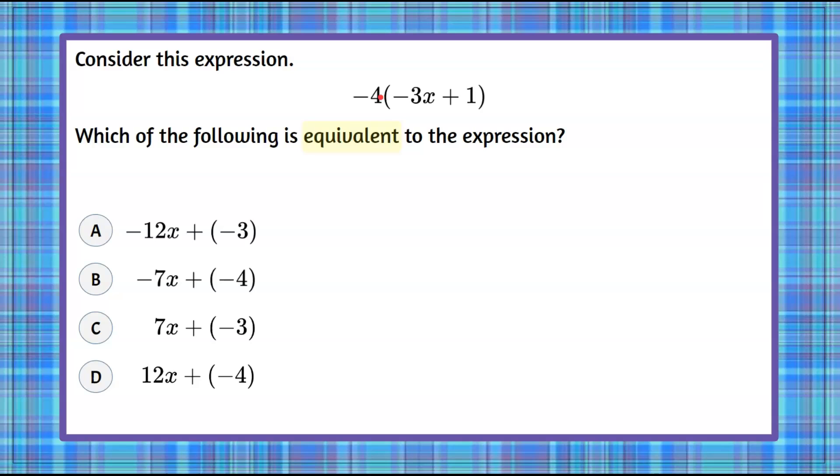So we need to share or distribute the negative 4 to the negative 3x and the positive 1 and there was an invisible multiplication sign here. So we're finding the product meaning we're multiplying. So the first thing we're going to do is identify our factors and now we're going to distribute.